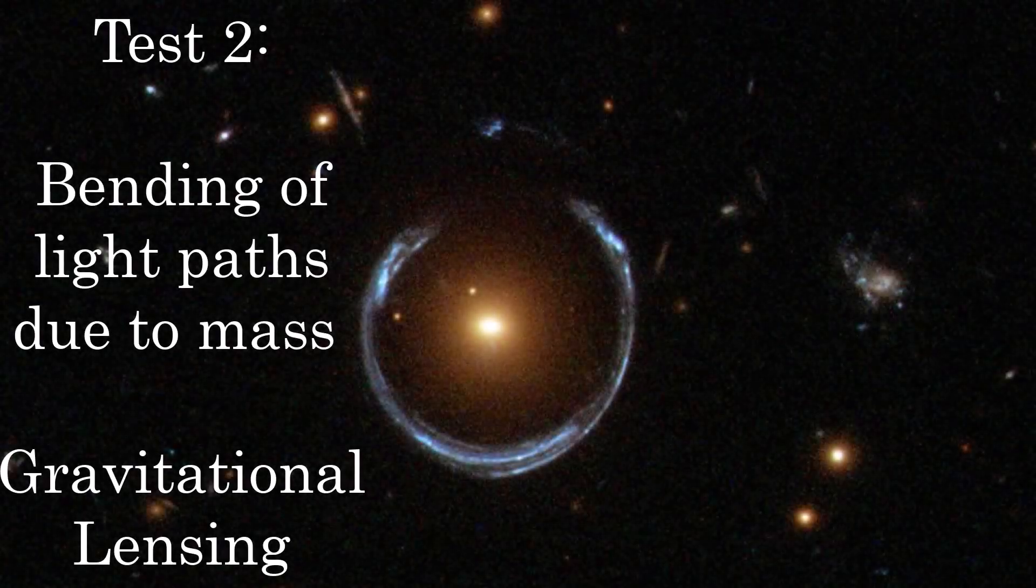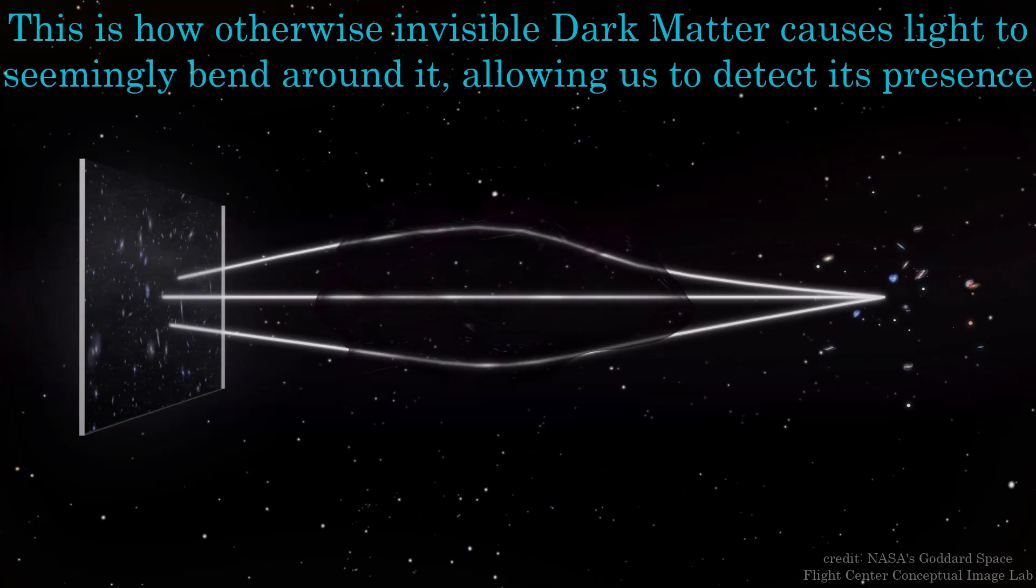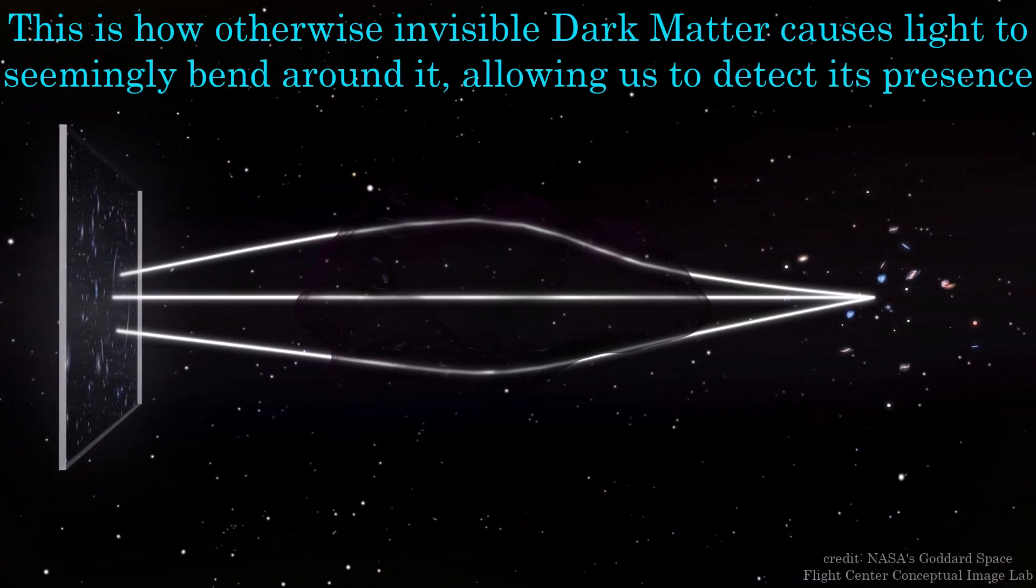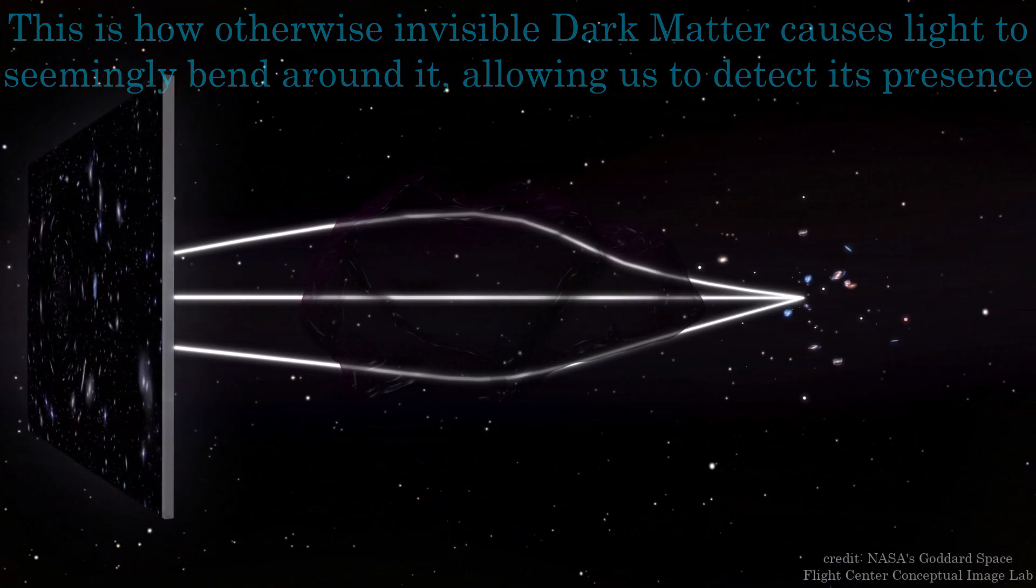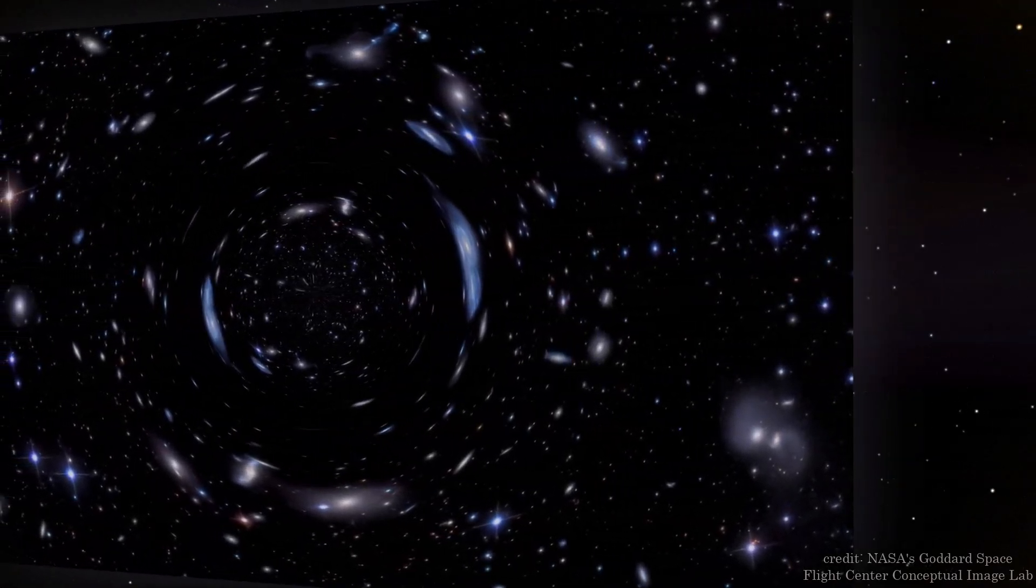The next test was the first novel test of general relativity, which was first performed in 1919, and that is the predicted bending of light around a massive object. In GR, large masses distort spacetime, meaning that even massless particles such as photons, which constitute light, should also have their motion affected by the presence of a massive object.